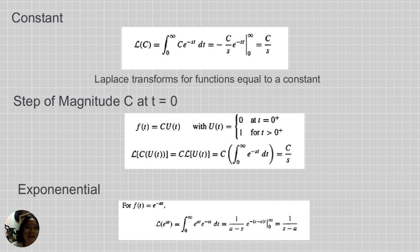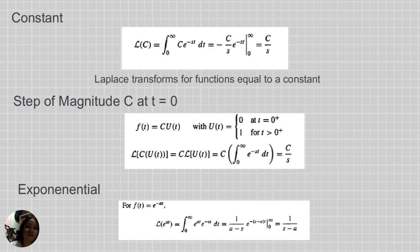For a constant, the Laplace transform of a constant function equals the integral from zero to infinity of c e^(-st) dt, which equals negative c over s times e^(-st) evaluated from zero to infinity, giving c over s. A step of magnitude c at t equals zero is defined as f(t) = c u(t), where u(t) equals zero for t less than zero and one for t greater than zero.